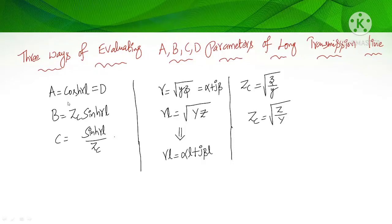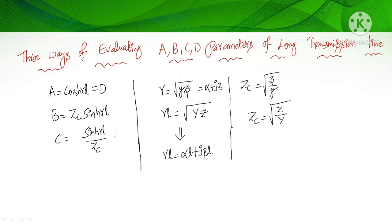The ABCD parameters are: A and D equal to cosh(γl), B equal to Zc·sinh(γl), and C equal to (1/Zc)·sinh(γl). These are the ABCD parameters of a long transmission line. Gamma is the propagation constant, introduced in the rigorous solution for sending end voltage and current. It is the square root of the product of admittance and impedance, written in rectangular form.